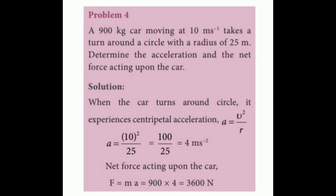Problem: A 900 kg car moving at 10 m/s takes a turn around a circle with a radius of 25 m. Determine the acceleration and the net force acting upon the car. Solution: When the car turns around a circle, it experiences centripetal acceleration: a = v²/r = 10² / 25 = 100 / 25 = 4 m/s². Net force: F = ma = 900 × 4 = 3600 N.